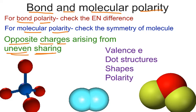If we're looking at bond polarity, we have to determine the electronegativity differences. We have our reference tables, so we're not going to panic. We simply look at electronegativities, do a subtraction, and make a determination from there.